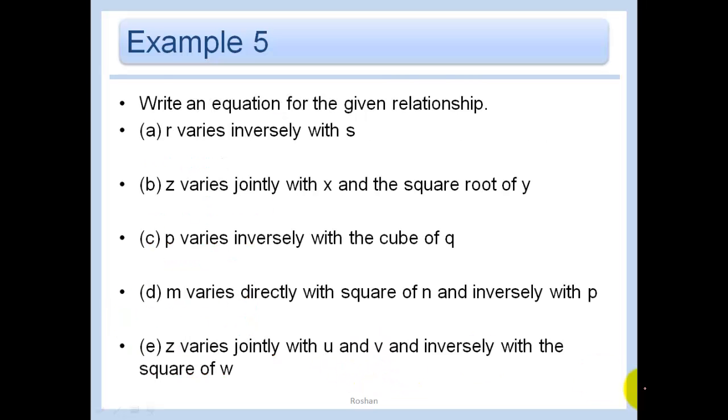Finally, write an equation for the given relationship. R varies inversely with S. So R and S vary inversely. Z varies jointly with X and the square root of Y. So that would be root Y. So it varies jointly with those.